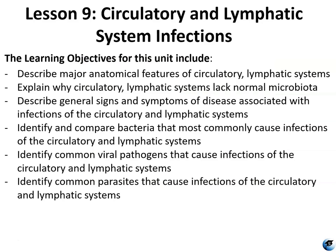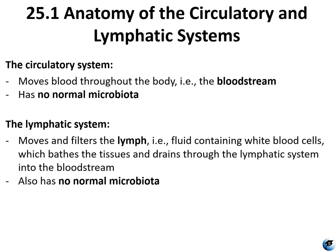The learning objectives for this unit include describing major anatomical features of circulatory and lymphatic systems, explaining why circulatory and lymphatic systems lack normal microbiota, and describing general signs and symptoms of disease associated with infections in the circulatory and lymphatic systems. We'll also be identifying and comparing bacteria and common viral pathogens that cause these infections, and finally, we'll look at common parasites that cause infections of the circulatory and lymphatic systems.